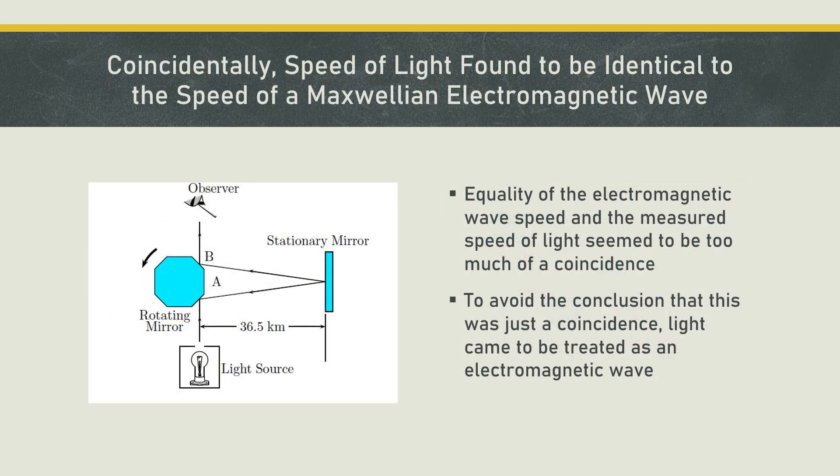Meanwhile, experiments were measuring the speed of light also to be around 186,000 miles per hour. It would have been too much of a coincidence for the measured speed of light to equal the computed speed of electromagnetic waves. To avoid the conclusion that this was just a coincidence, light was deemed to be an electromagnetic wave.